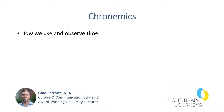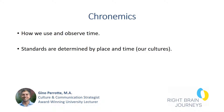I generally define chronemics as how we use and observe time. Chron, like chronology — chron means time. Basically, what we're looking at is how cultures influence how individuals believe what is on time versus late. Chronemics really does get tied in with intercultural studies, and just like my previous video on physical appearance, the standards for chronemics are also determined by place and time, which is how culture is built.